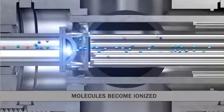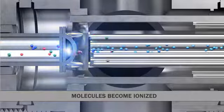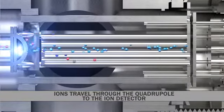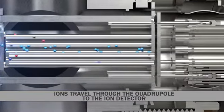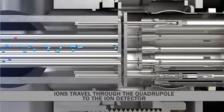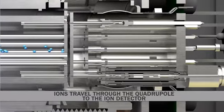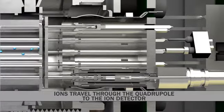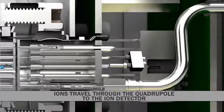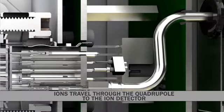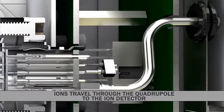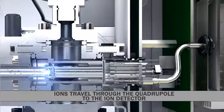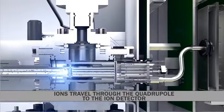These positively charged ions then travel through AMS's quadrupole mass filter, which separates the ions according to their mass-to-charge ratio. The final element in the AMS is a Faraday-Cup ion detector, which records and quantifies the electrically charged ions.